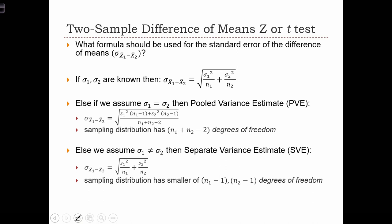What formula should we use for the standard error of the difference of means? When sigma1 and sigma2 are known, then we can simply take an average, essentially an average, of the two sigmas. So we have sigma1 squared over n1 and sigma2 squared over n2.